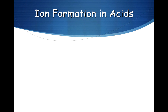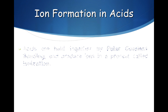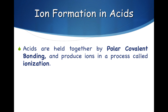Let's consider how ions form in acids. Remember, how ions are formed depends on the chemical bonding in the substance that is dissolving in water. Acids are held together by polar covalent bonding and produce ions in a process called ionization.